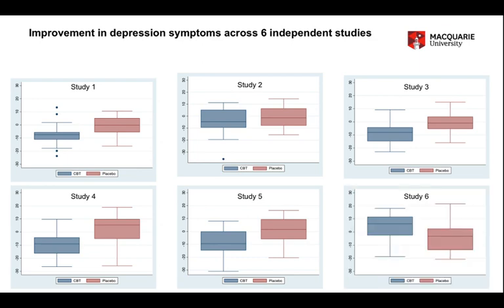But in the sixth study, we see the reverse — about the same magnitude, but in the reverse direction to the first five. This is the odd one out. What these six studies would say is that, on balance, we would conclude that CBT is superior to placebo, even though in this one study that wasn't true. We would attribute this one study to random sampling variance, and say that we believe the majority of studies — let the majority rule.